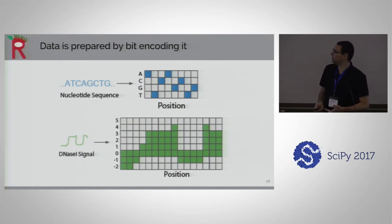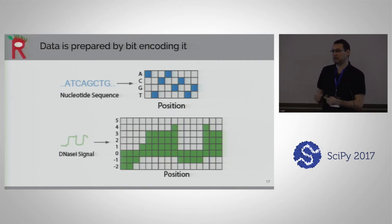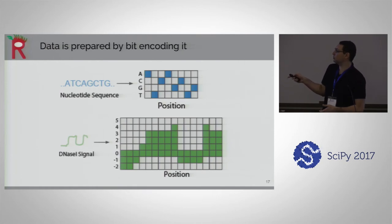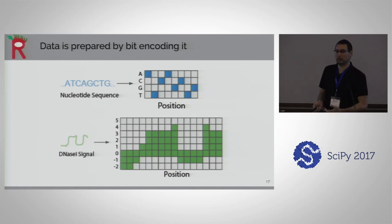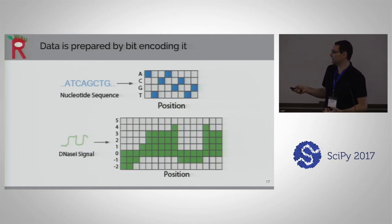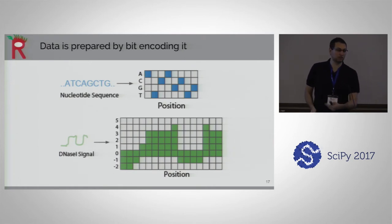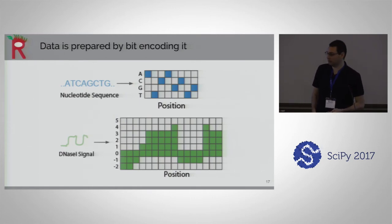In our analysis we have patterns we'd like to identify in the sequence — these are called motifs — and we can use the exact same methods, learning convolutions directly on the DNA to pick up motifs. We prepare our data by one-hot encoding it so it looks like an image, since you can't feed a letter into a neural network. We have all positions on one axis, and whether it's an A, C, G, or T on the other. For DNase signal we use a bit encoding where we fill in between negative values and zero.